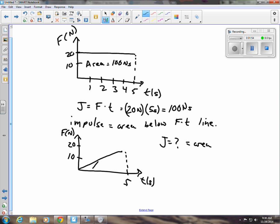Then in this case, it's a triangle and I'm finding the area of it. So the impulse is base times height divided by 2 for this one. So the base of this is 5 seconds, height is 20 newtons, and that's going to give me 50 newton-seconds for the impulse.